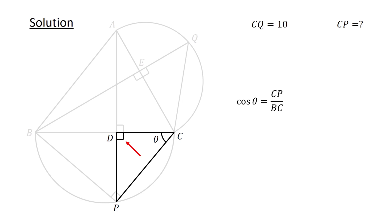In right triangle PCD, we have cosine theta equals CD over CP. Thus, CP over BC equals CD over CP. Or, after cross multiplying, CP squared equals BC times CD.